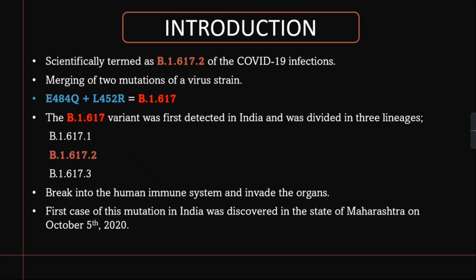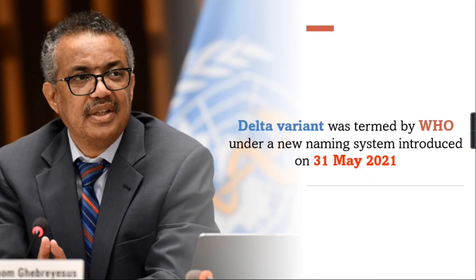The first case of this mutation in our country was identified in the state of Maharashtra on October 5th, 2020. The name Delta variant was given by the WHO under a new naming system introduced recently on 31st May 2021.